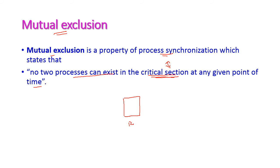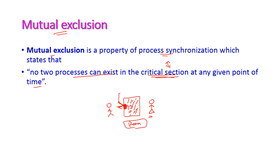For example, consider one room. At a time only one person can access this particular room. One boy comes, opens the door, goes inside, and locks the door until he completes his work. A girl also comes and wants to enter. Since the boy is inside and has locked the room, the girl must wait. Once the boy opens the door and comes out, the girl goes inside, locks the door, does her work, then opens the lock and comes out. This is mutual exclusion — the room is the critical region and only one person can access it at a time.